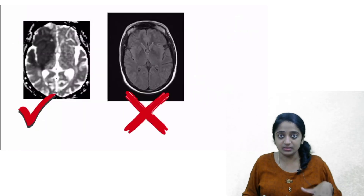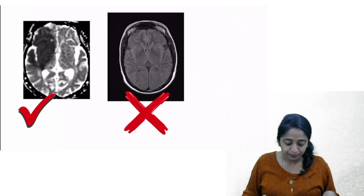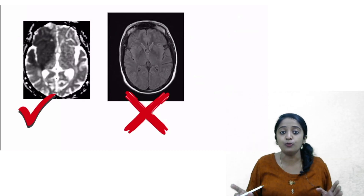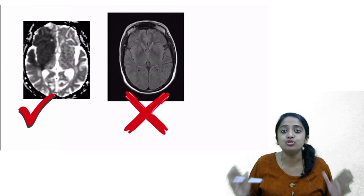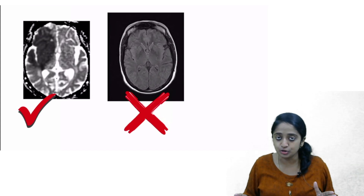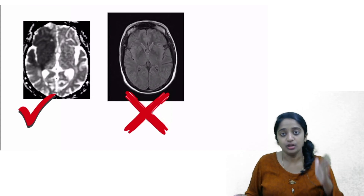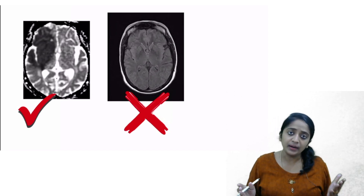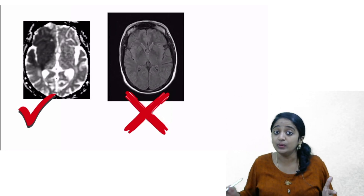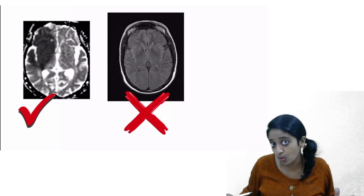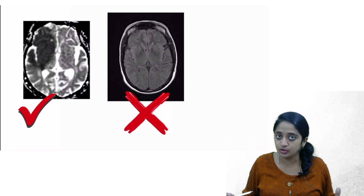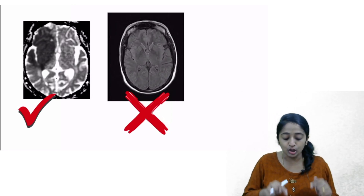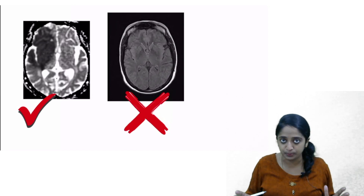Now let's take another scenario. When suspecting acute infarct, you go for MRI stroke protocol — the sequence of choice is diffusion-weighted imaging. After obtaining the diffusion-weighted sequence, you naturally proceed with other sequences, including FLAIR. Here we have two images: a diffusion-weighted image and the corresponding ADC map, followed by FLAIR.